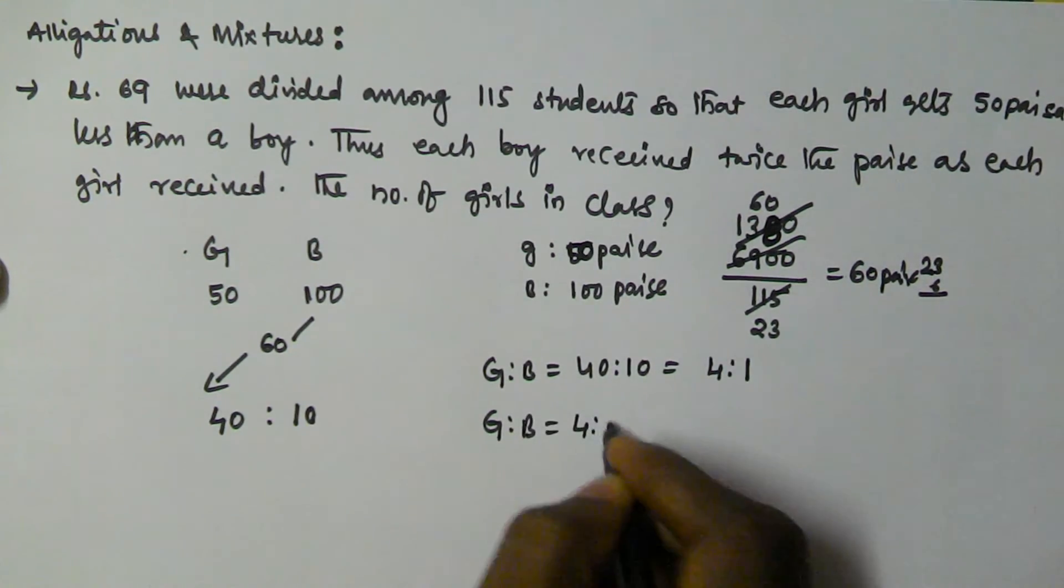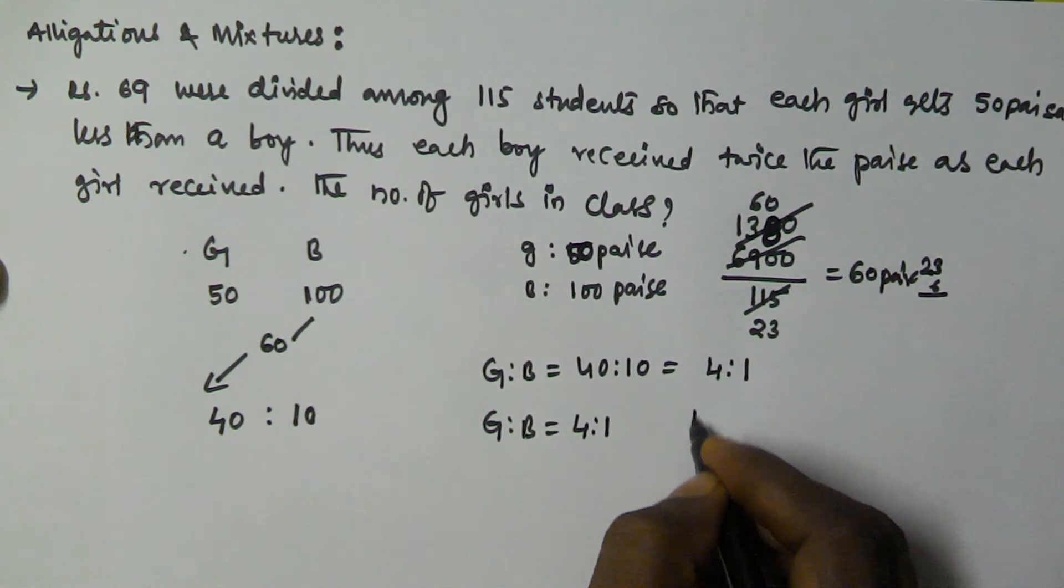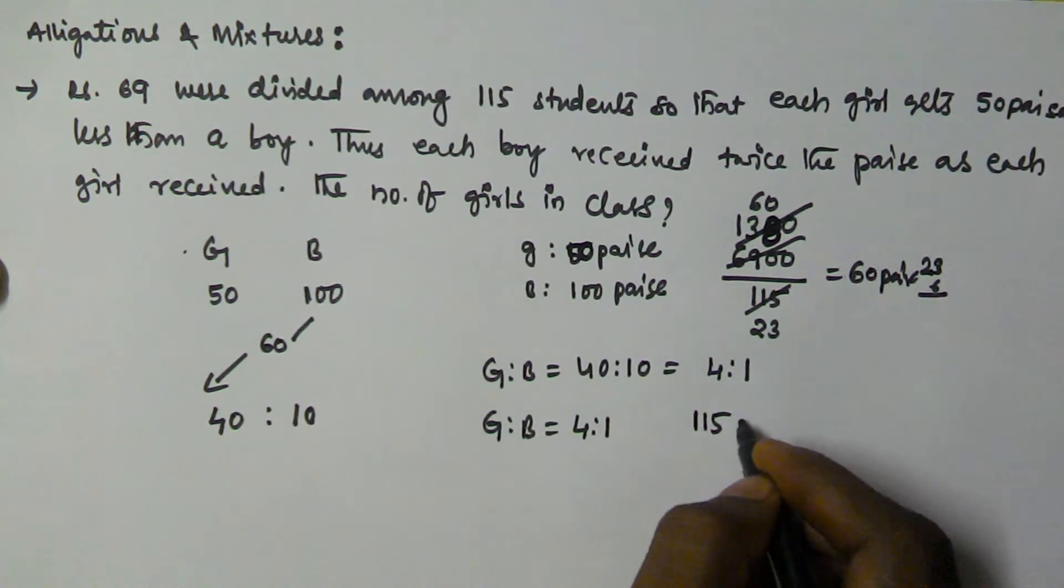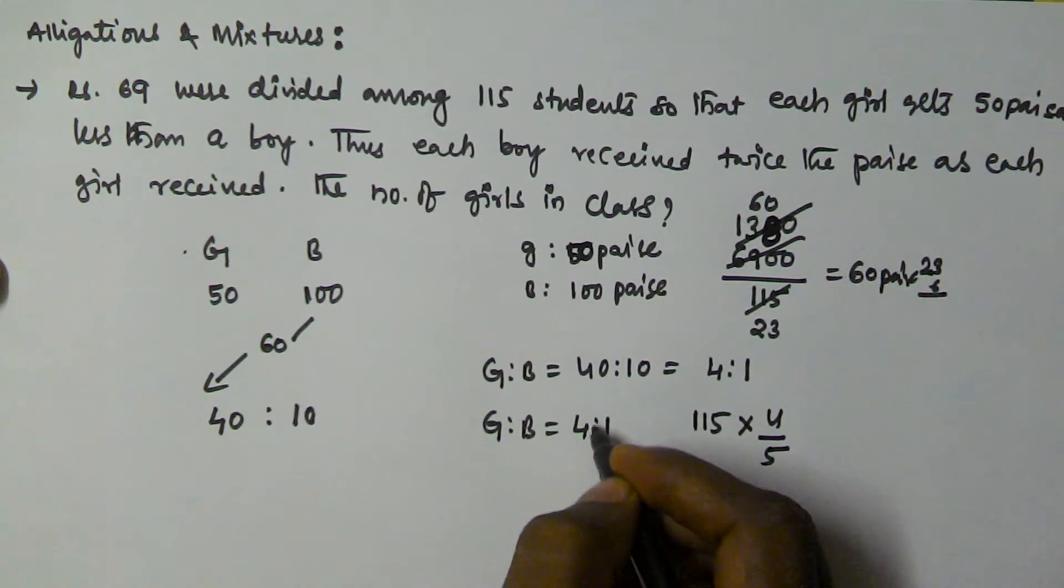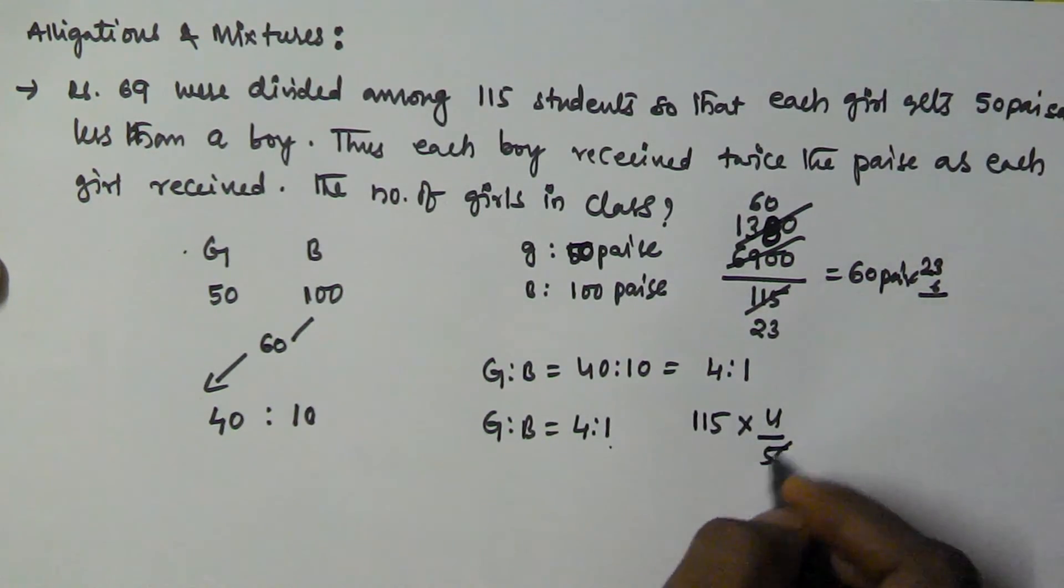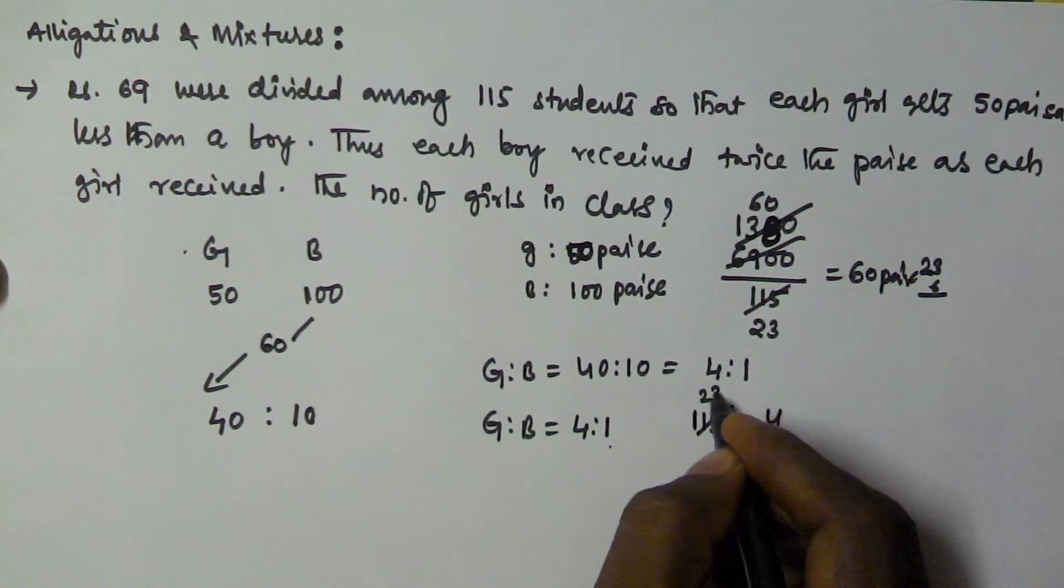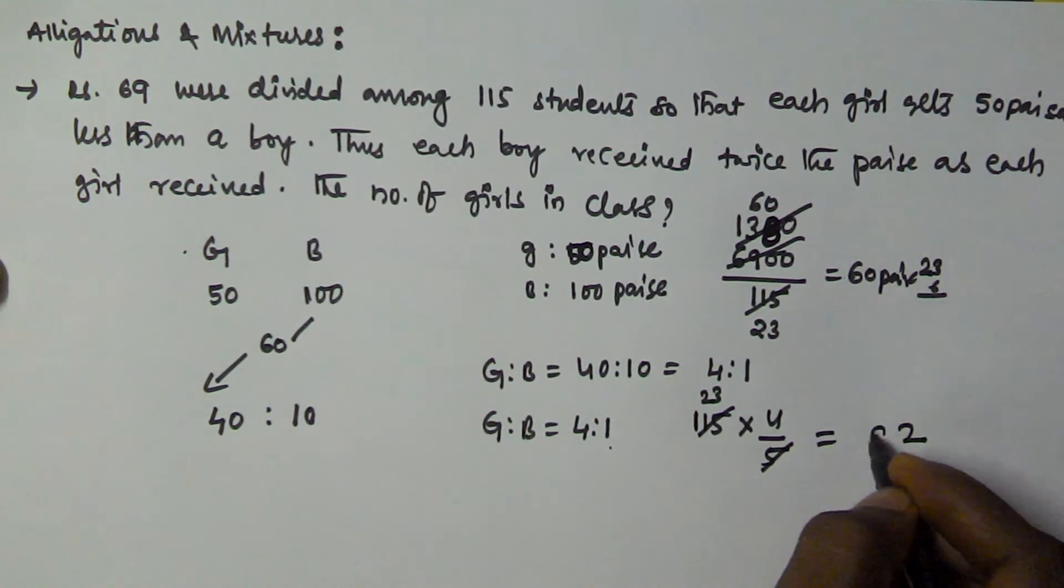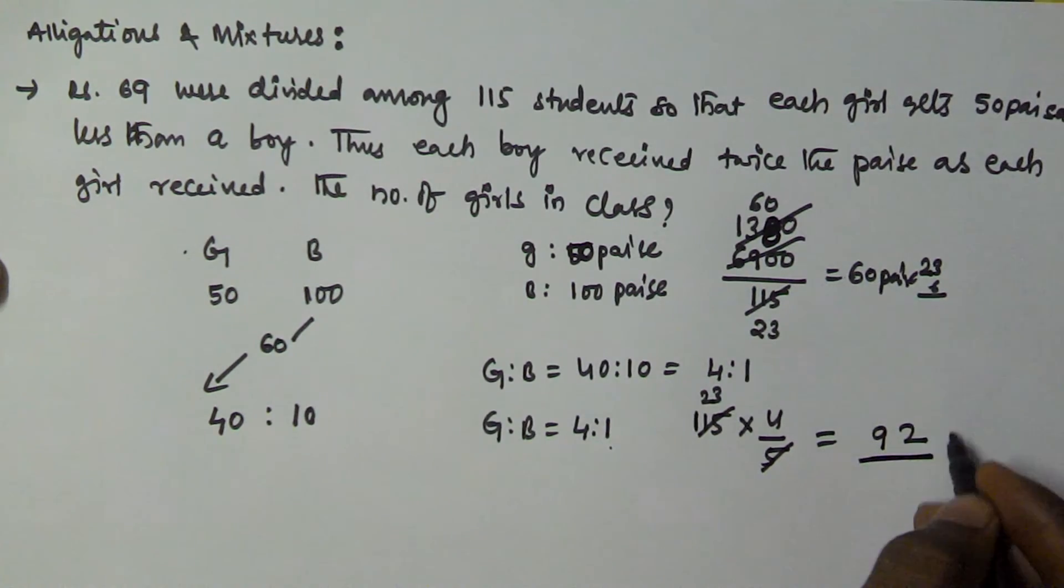So the girls to boys ratio is 4 to 1. There are 115 students, so the number of girls is 4 out of 5 parts. So 4 by 5 times 115 equals 92. So there are 92 girls in the class.